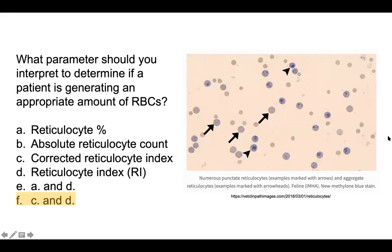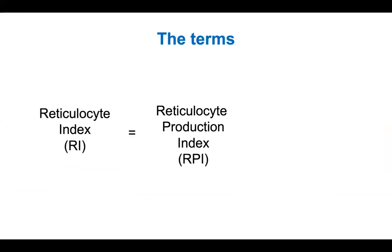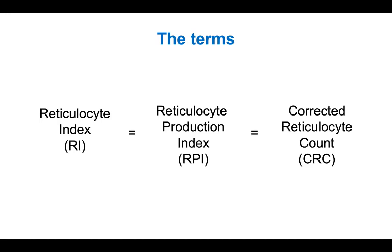The answer is the corrected retic index and the retic index are both the right answer. Let's go over the terms. Reticulocyte index is the same as reticulocyte production index, which is the same as corrected reticulocyte count. It's important to know these are all the same things when people are using these terms interchangeably.